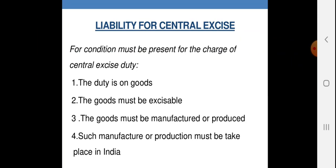Liability for Central Excise — केंद्रीय उत्पाद शुल्क की देनदारी — four conditions must be present for charge of Central Excise Duty: Number one, the goods must be excisable — कुछ वस्तुएं जैसे गेहूं और कृषि उत्पादन excise duty से मुक्त हैं। The goods must be manufactured or produced — वस्तुओं का उत्पादन होना चाहिए। Such manufacture or production must take place in India — उत्पादन भारतीय सीमाओं के अंदर होना आवश्यक है।